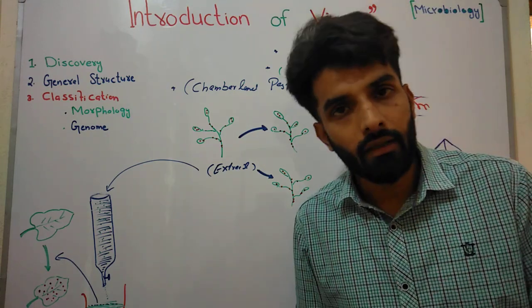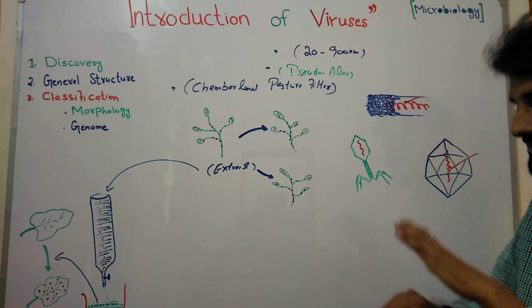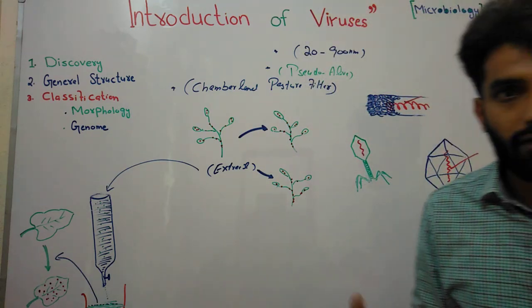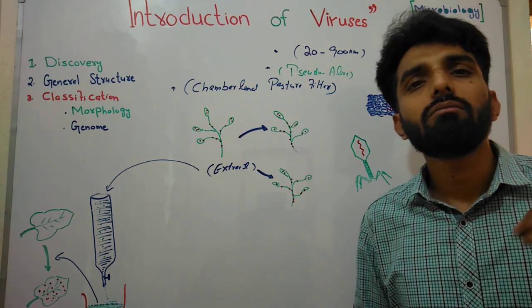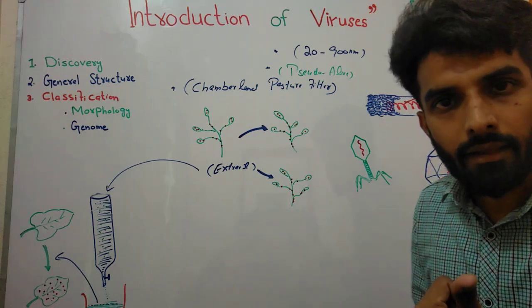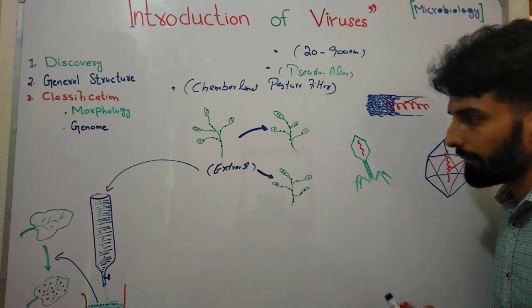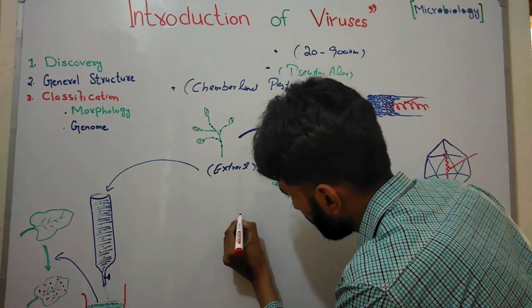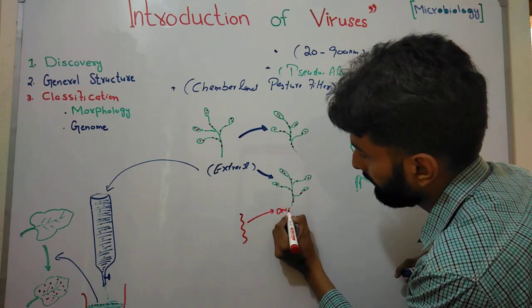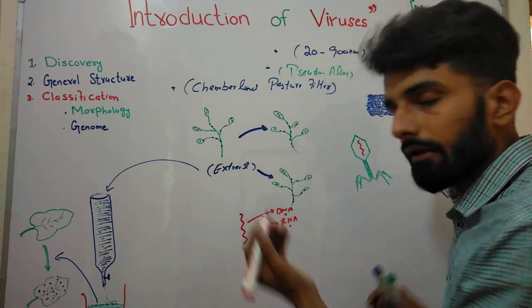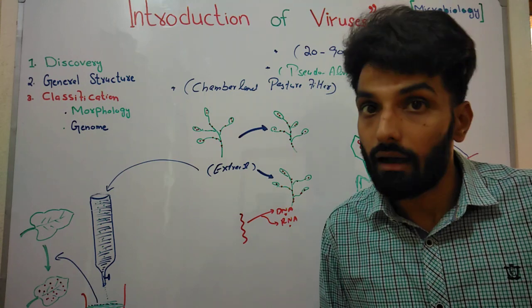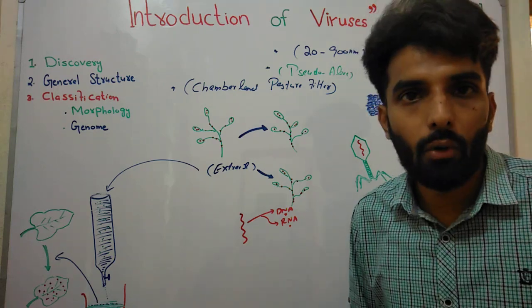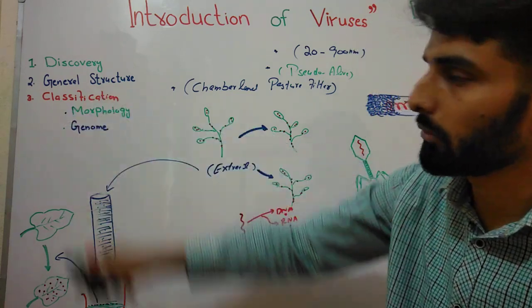After the discovery of the electron microscope, we studied the detailed structure of tobacco mosaic virus, and this is the way viruses were discovered. Now, if we talk about the general structure of a virus, viruses are made up of two or sometimes three things. The first is the genome, which can be either DNA or RNA. Viruses having DNA as their genome are called DNA viruses, and viruses having RNA as their genome are called RNA viruses.